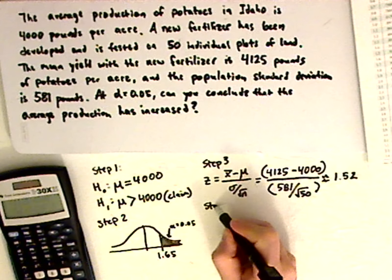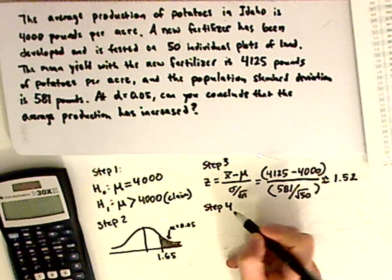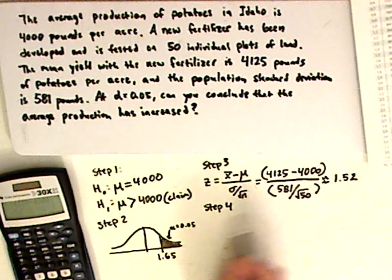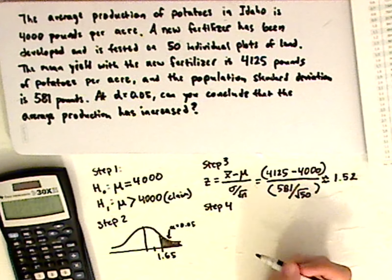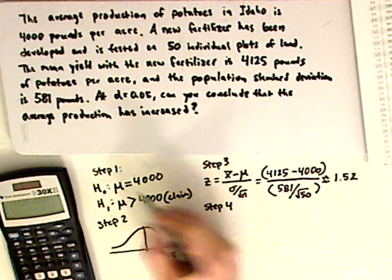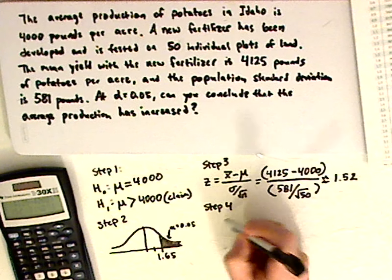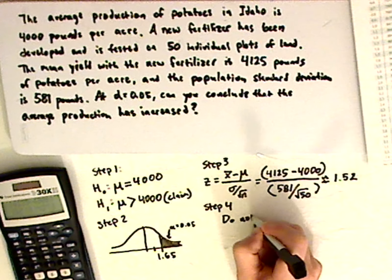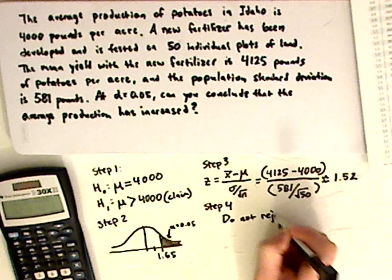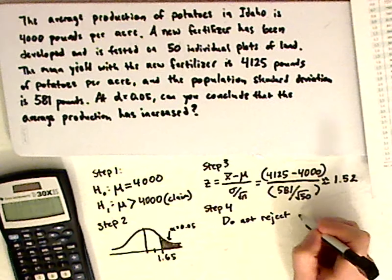Step 4 is I have to make a decision. This falls outside the rejection region. So I do not reject the null hypothesis.